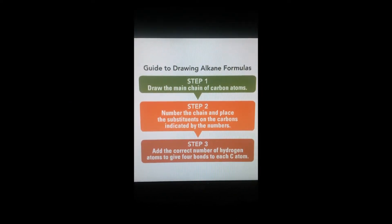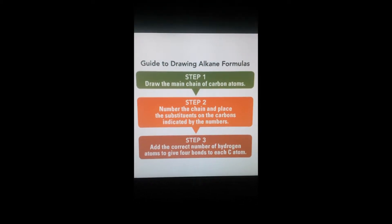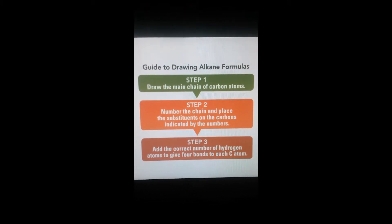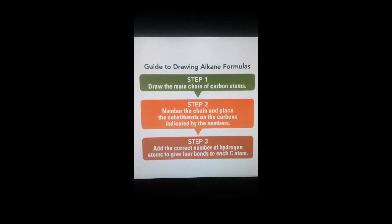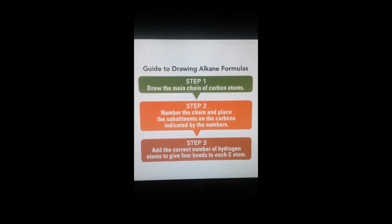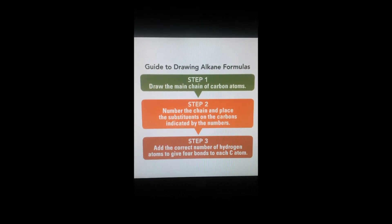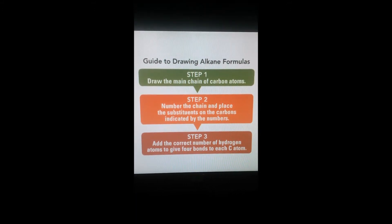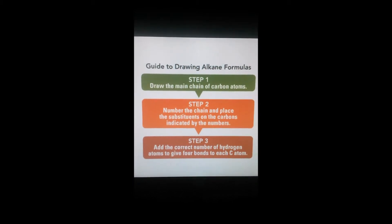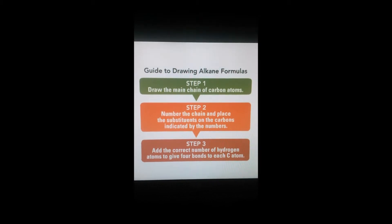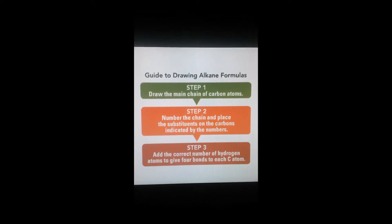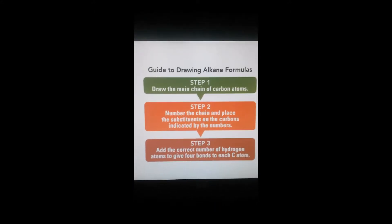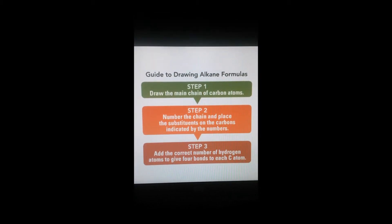Now I am going to show you the steps on how to draw structural formulas for alkanes. When we have the name of an alkane, the first thing we need to do is draw the main chain of carbon atoms. For example, if we have hexane, we draw six carbon atoms. Step two is to number the chain and place the substituents on the carbons indicated by the numbers — we identify the alkyl groups and locate them. Finally, step three is to add the correct number of hydrogen atoms to give four bonds to each carbon atom.